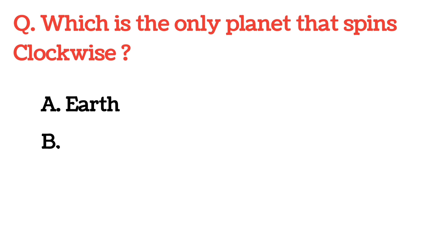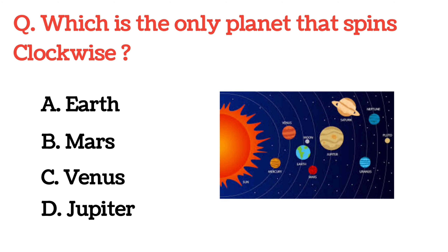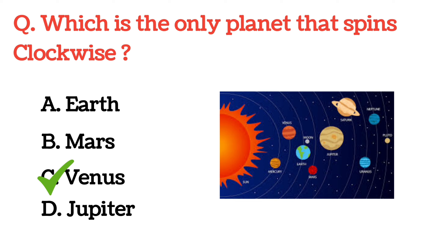Which is the only planet that spins clockwise? The correct answer is Option C: Venus.